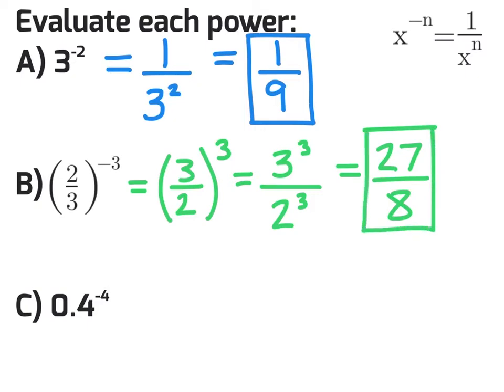And for the third example, we have a decimal, 0.4 or 4 tenths to the power of negative 4. What I'm going to suggest you do is really just use your calculator for that.